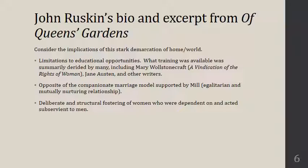Ruskin's model and his support of the separation of spheres is also the opposite of the companionate marriage model. You'll notice the wording in Of Queen's Gardens makes women really subservient to men — a very patriarchal structure — whereas someone like Mill supported a more egalitarian model in which two individuals were in a mutually nurturing relationship, intellectually as well as emotionally. For Ruskin, that's not on his radar. Also, there's a deliberate and structural fostering of women who are dependent on and subservient to men. You can see the gender norms impacted women not only in terms of their education, but also what ended up happening if they were to marry.